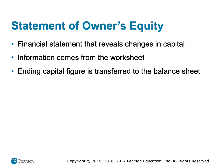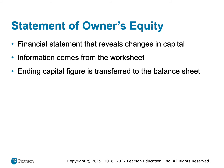We have to do the statement of owner's equity, which reveals the changes in the capital account. We pull those numbers straight off the adjusted trial balance columns of the worksheet. Notice the three-line heading: name of the company, the name of the statement, and the date — which covers the exact same period of time as the income statement. We start with our capital balance from the worksheet, add in net income from the income statement, subtract withdrawals — put parentheses around that — and that gives us our ending capital balance, which will be used on the balance sheet.